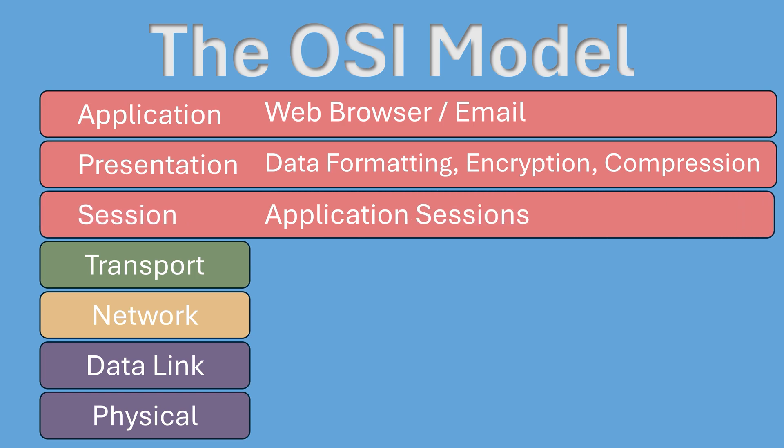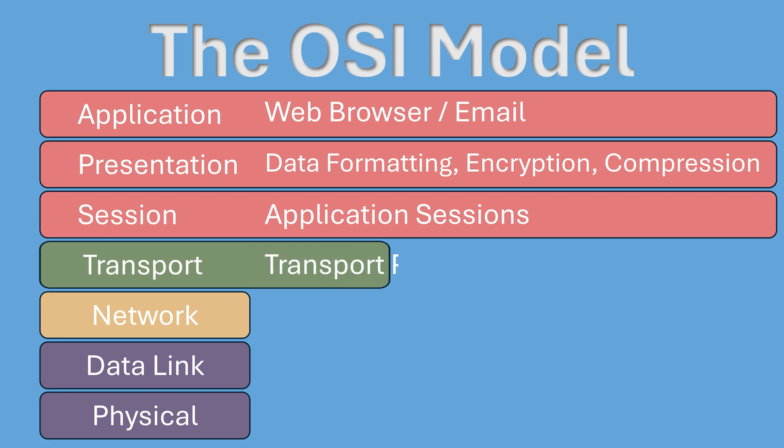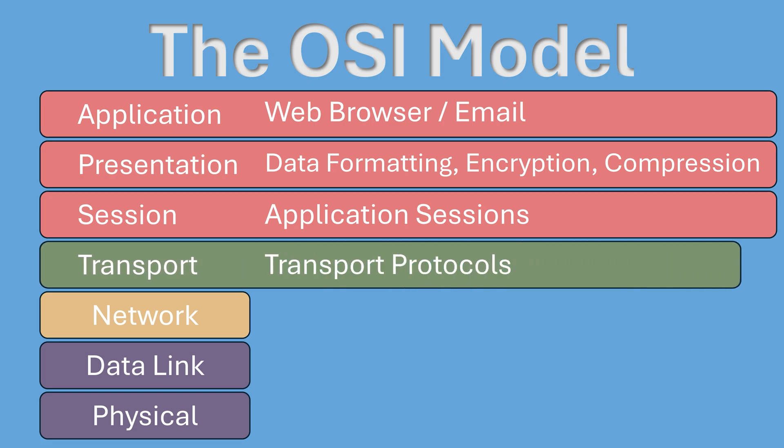Next, we have the session layer. It manages connections between applications, keeping track of your login sessions and ensuring you stay connected as you navigate through different pages of a website. Moving down, we reach the transport layer, where we find protocols such as TCP and UDP. Devices such as firewalls and load balancers operate here, ensuring data flows securely and efficiently.